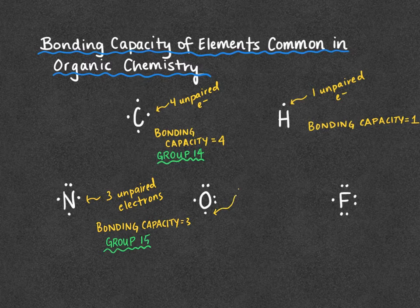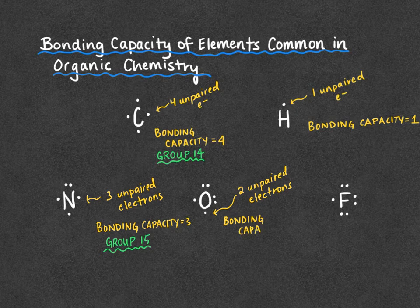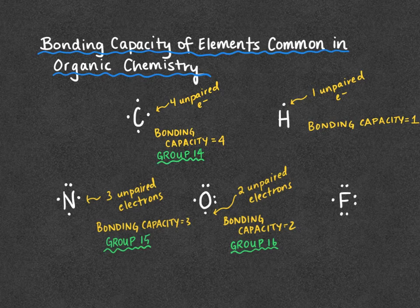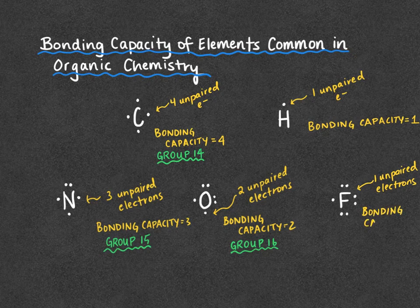Looking at oxygen, we see two unpaired electrons, so oxygen has a bonding capacity of two. That's going to be true for everything in group 16 — primarily oxygen and sulfur — both will have a bonding capacity of two. Lastly, fluorine has one unpaired electron, and this is true of all halogens — everything in group 17. So fluorine has a bonding capacity of one and can form one covalent bond.